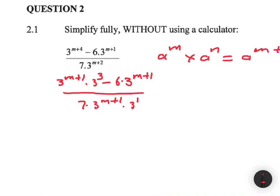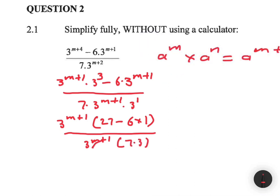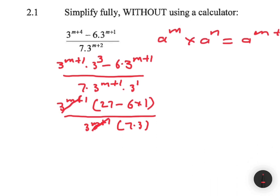We're going to take 3 to the power m plus 1 as a common factor in the numerator, leaving us with 3 to the power m plus 1 — which is 27 — and then minus 6 multiplied by 1. On the denominator, isolating 3 to the power m plus 1, we're left with 7 multiplied by 3. Then 3 to the power m plus 1 cancels out with 3 to the power m plus 1.